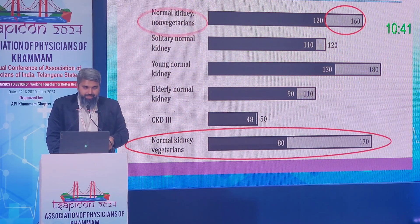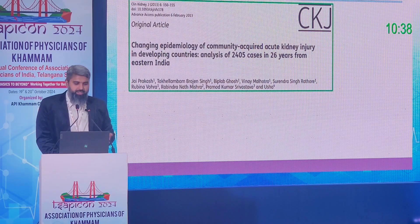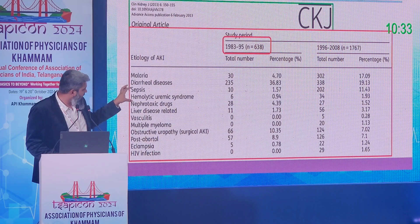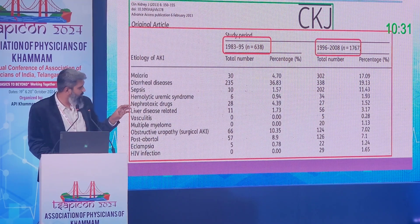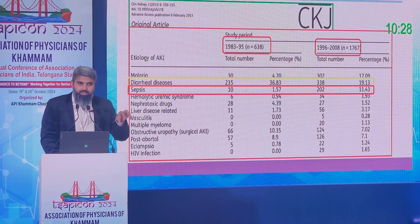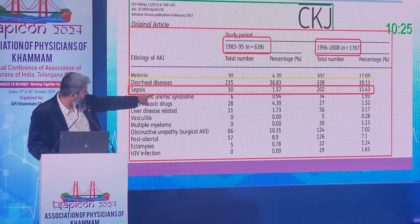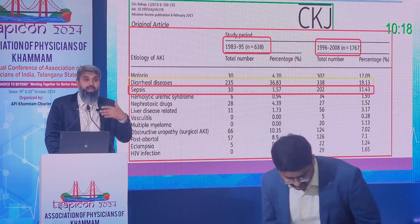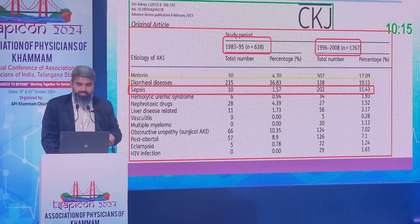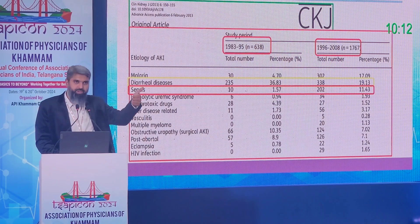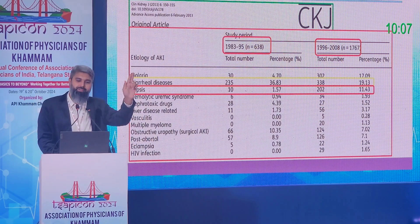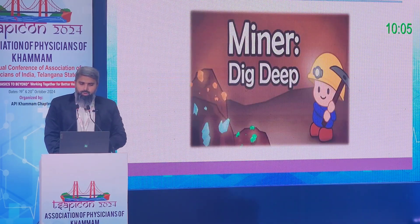AKI in India is changing fast. In the 1980s–90s, AKI was mainly due to diarrheal illnesses. Nowadays, sepsis is the primary cause, with AKI incidence due to sepsis in ICU rising from 1.6% to 11%, while diarrheal illness-related AKI has roughly halved. The most common causes are now infection, antibiotics, and dehydration — all of which are preventable.